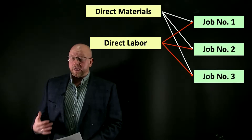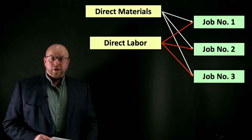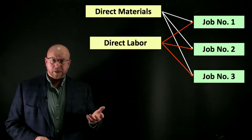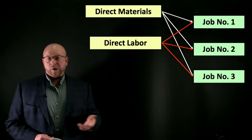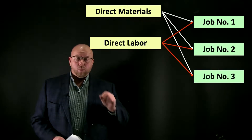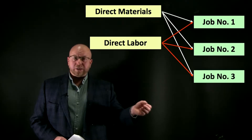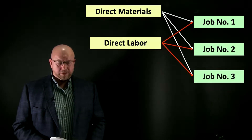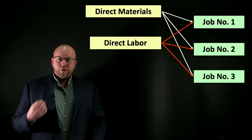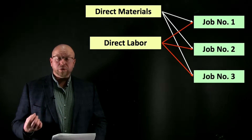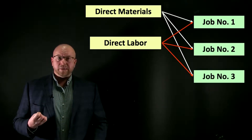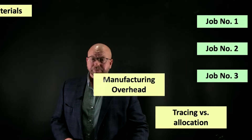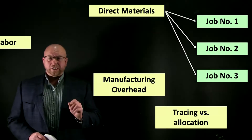Direct labor is not any more challenging because we have time records — probably a time sheet or an electronic time record. As people work on those jobs, they can record how many hours they worked and tell the accounting department how many hours to allocate to a particular job. So tracing costs is what we'll do whenever possible — that is going to be the most accurate way of assigning costs to a cost object.